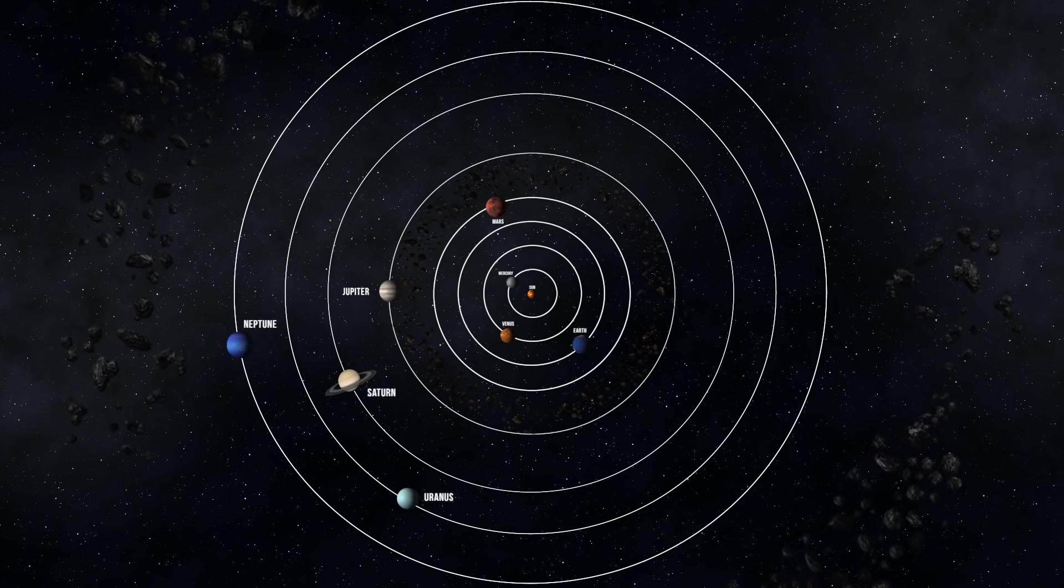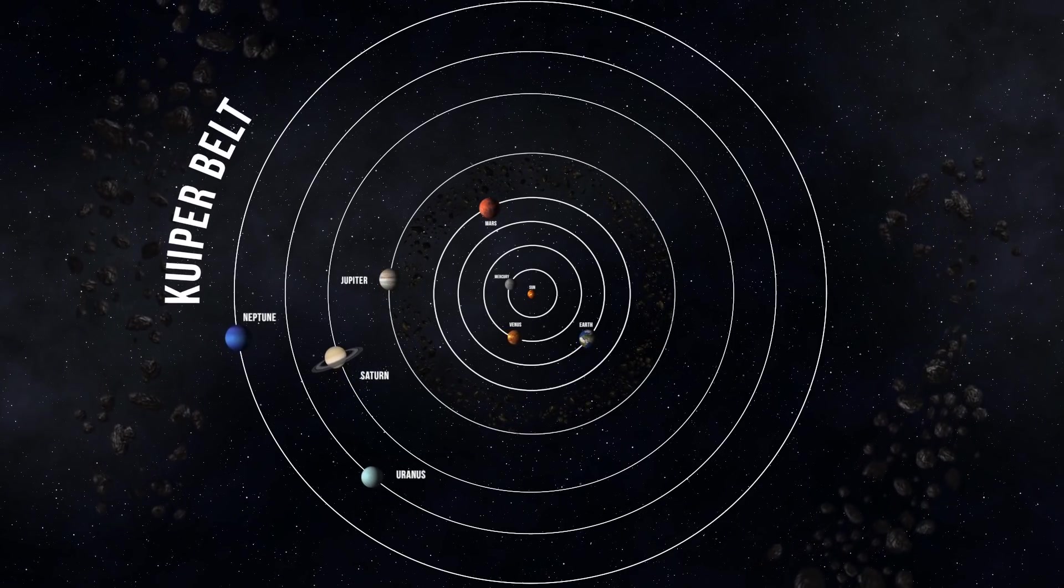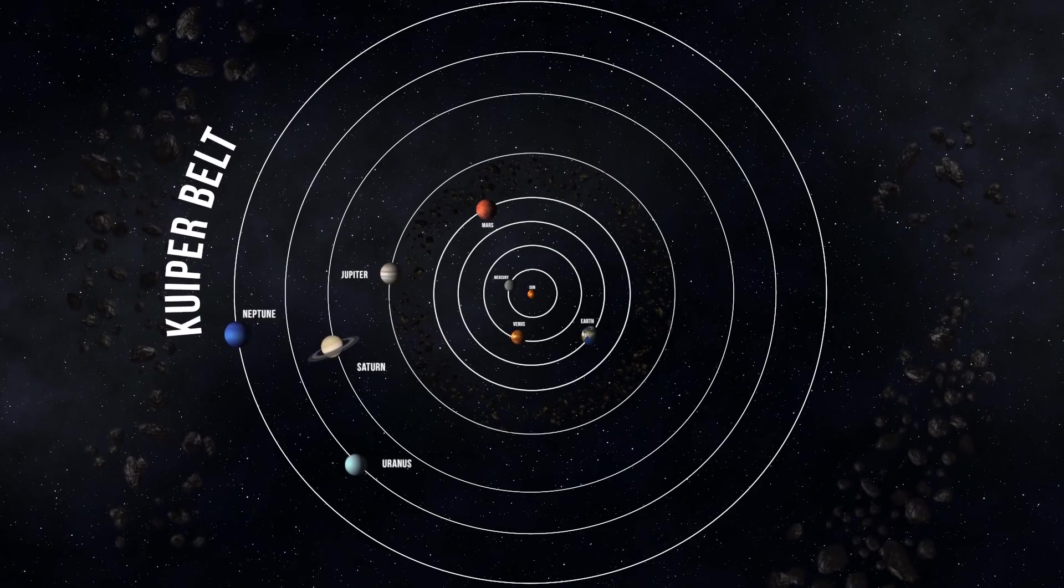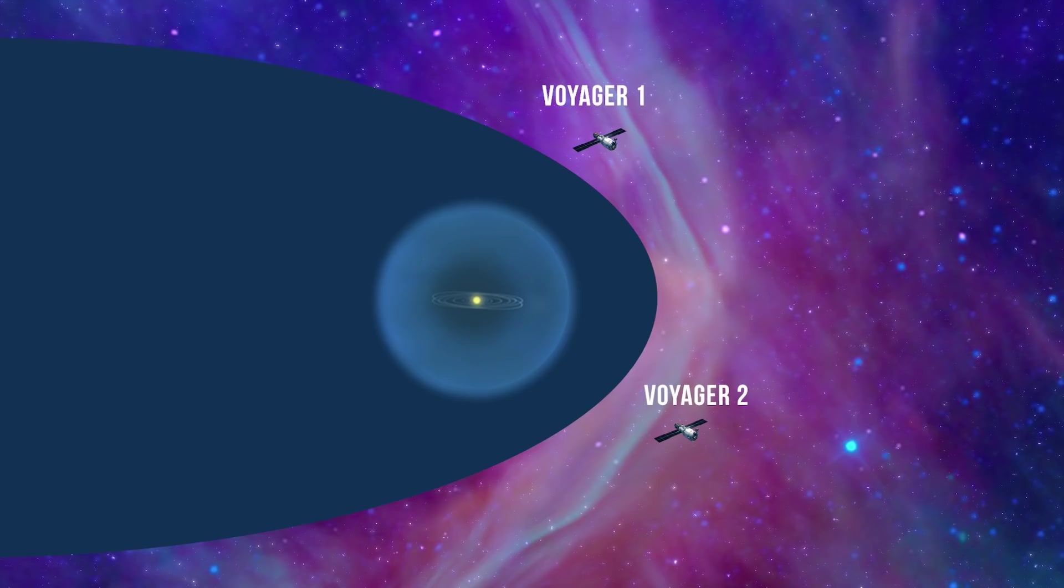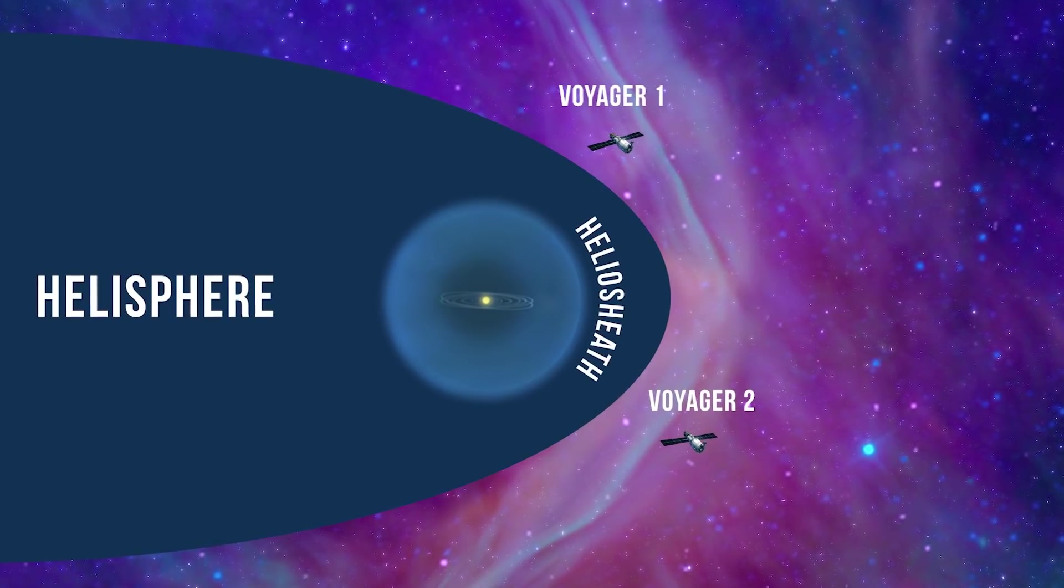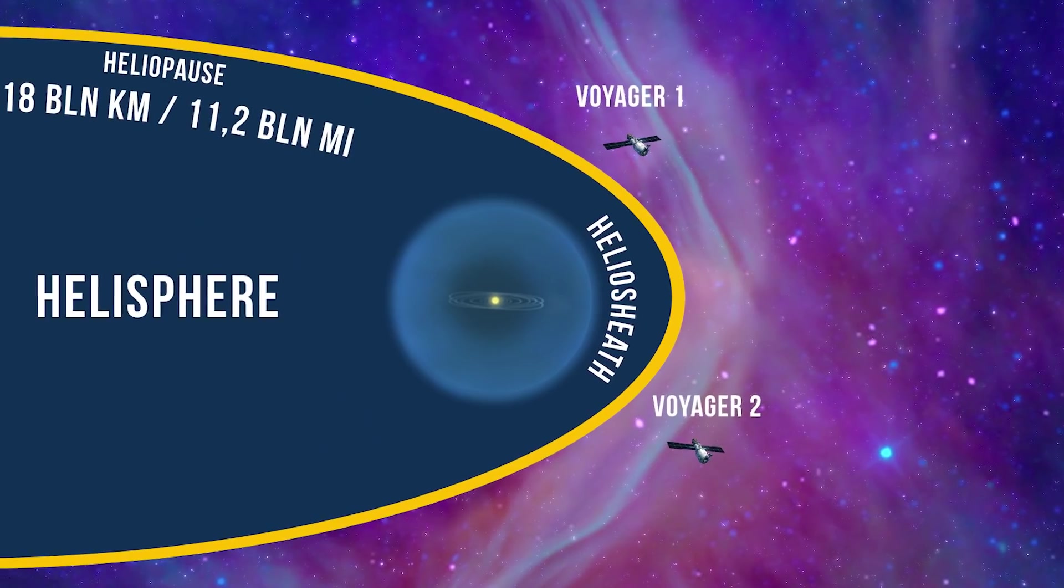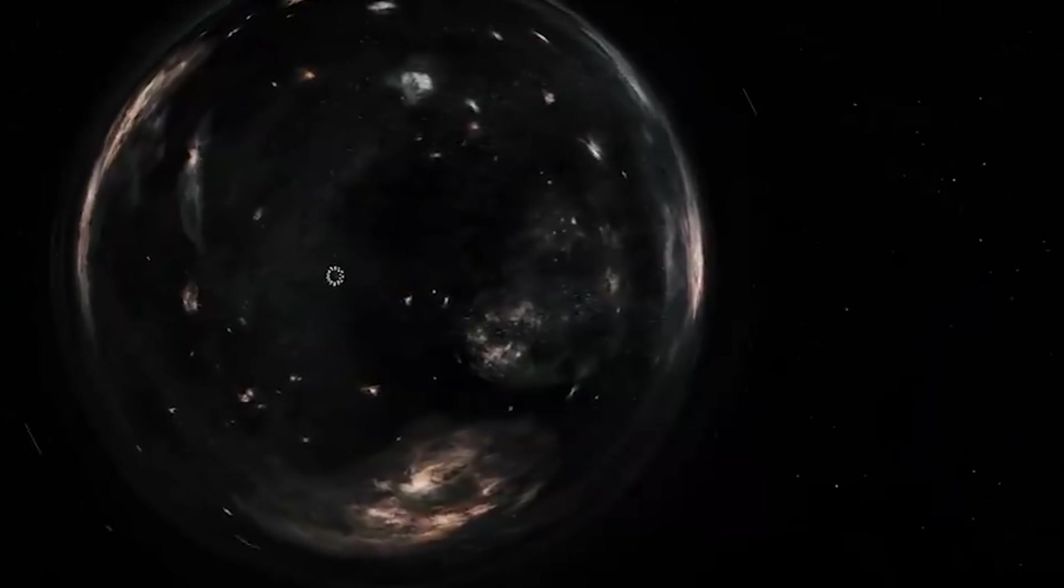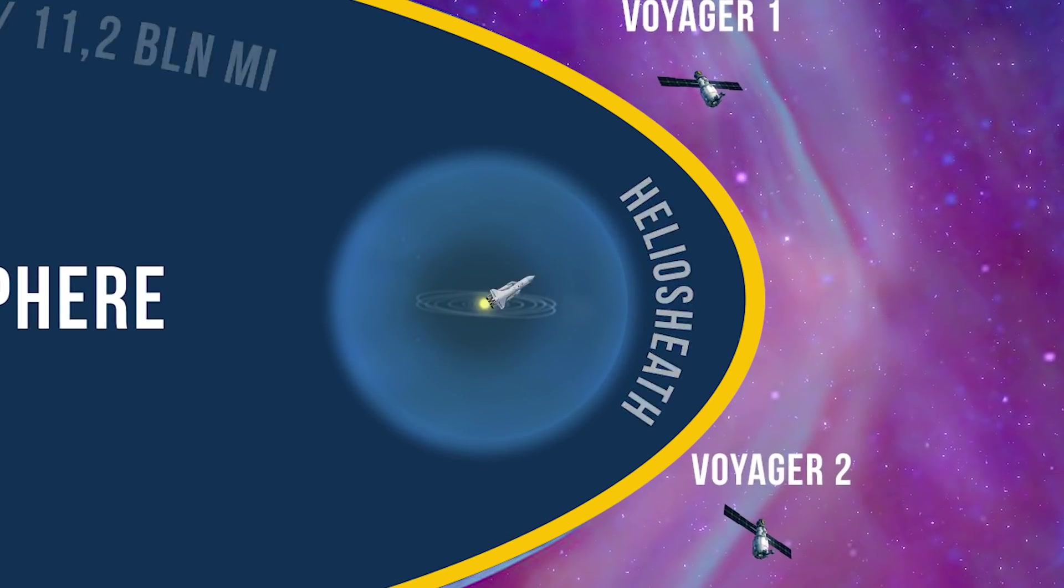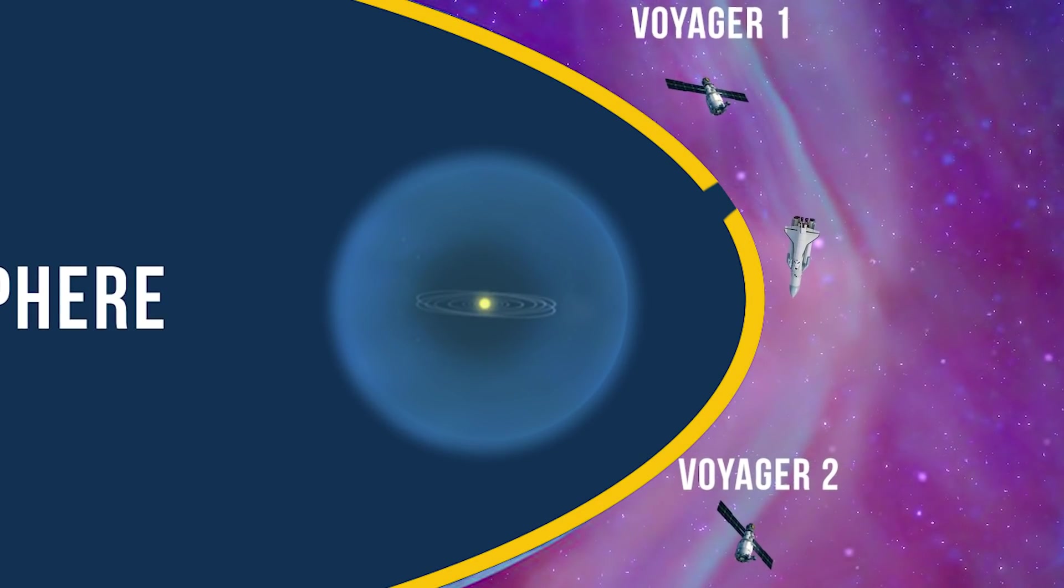Even when you pass the Kuiper belt, another rocky cosmic wall where Pluto belongs, there will still be the solar wind at your back. And it will disappear only when there are 18 billion kilometers between you and Earth. This is the heliopause, a cosmic wall that can be found where an interstellar particle beam neutralizes the solar wind. Our rocket, just like the Voyagers, will need more than 40 years to cross this line.